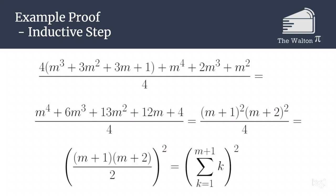Now that looks like a mess, but remember we know what our goal is to try and show. So we just have to check, does that actually equal m plus 1 squared times m plus 2 squared, which it turns out it does.